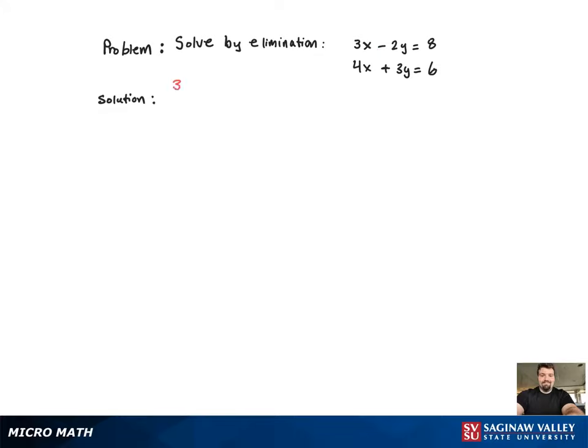So if I multiply the first equation by 3 and the second equation by 2, then you'll have plus and minus 6 as your y coefficients.